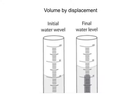Welcome to the Volume by Displacement tutorial. Displacement means to move something out of the way — if you displace something, you move it from one place to another. Volume by Displacement is figuring out how much space something takes up by how much water is displaced when you put it in water.